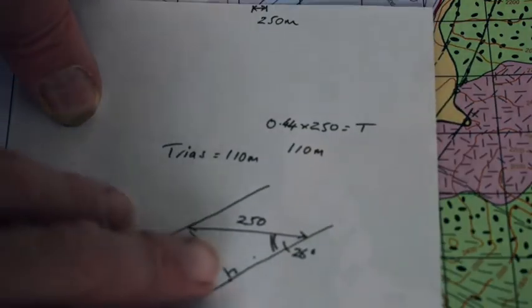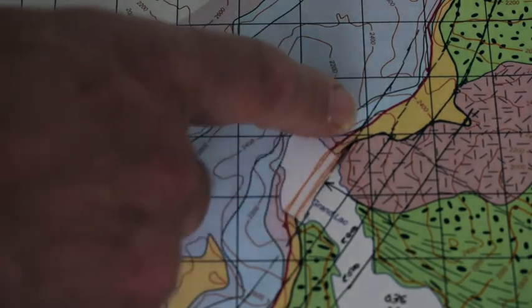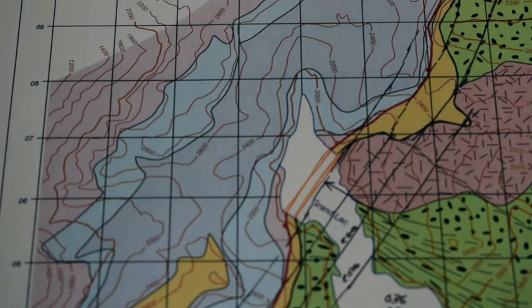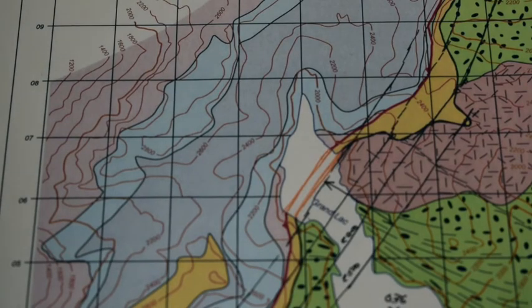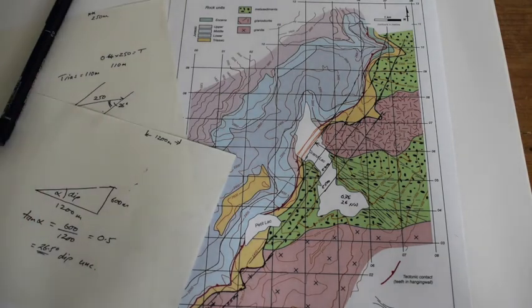Some simple ways of using structure contours to find out fairly precisely the orientation of a boundary and to work out a thickness of a unit, assuming of course that it remains a constant thickness. We could perform that calculation again in other places to see how well that assumption works out. So by applying structure contours and some simple trigonometry, we can establish something about the structure of an area and get some idea of stratigraphic thicknesses.